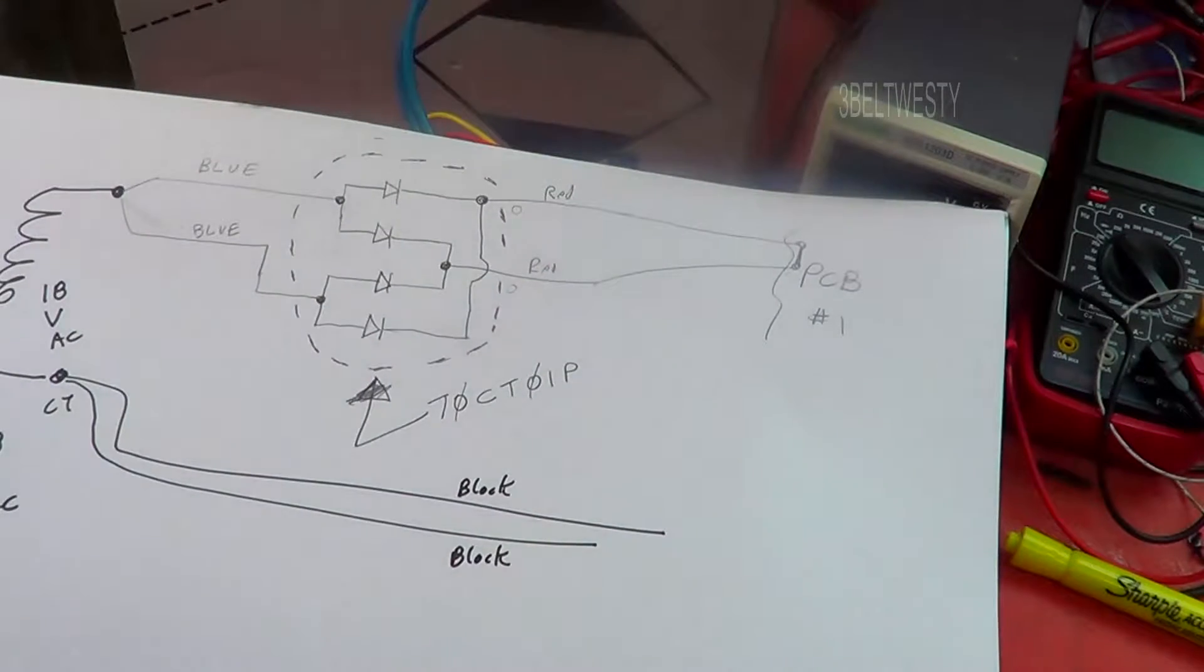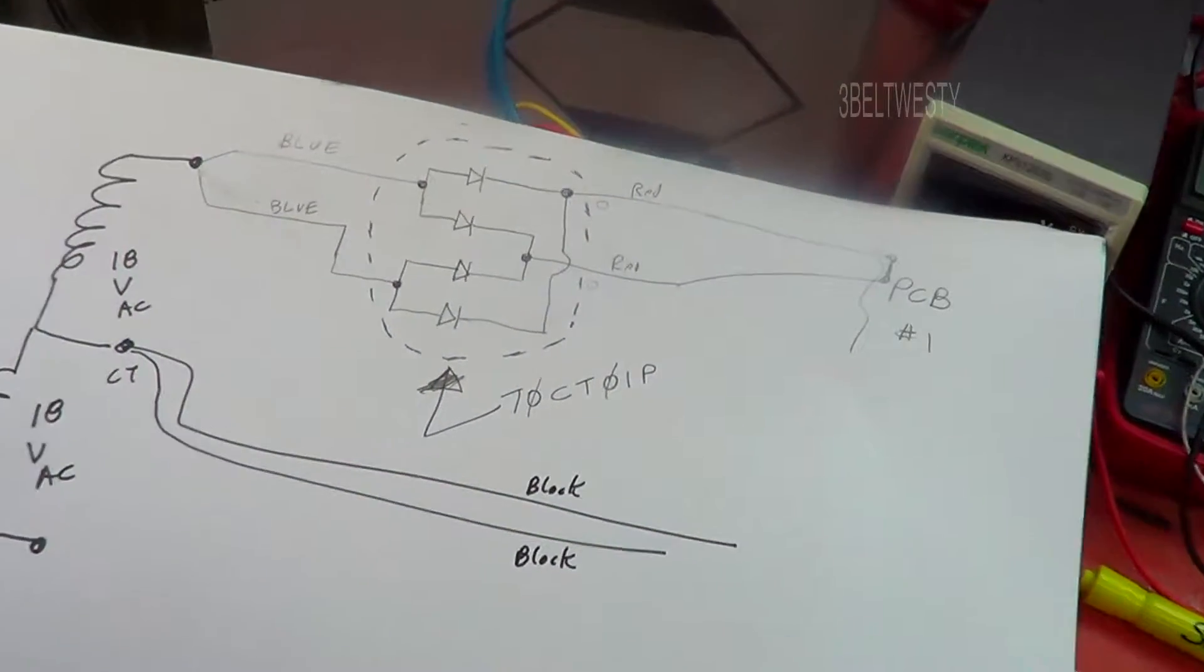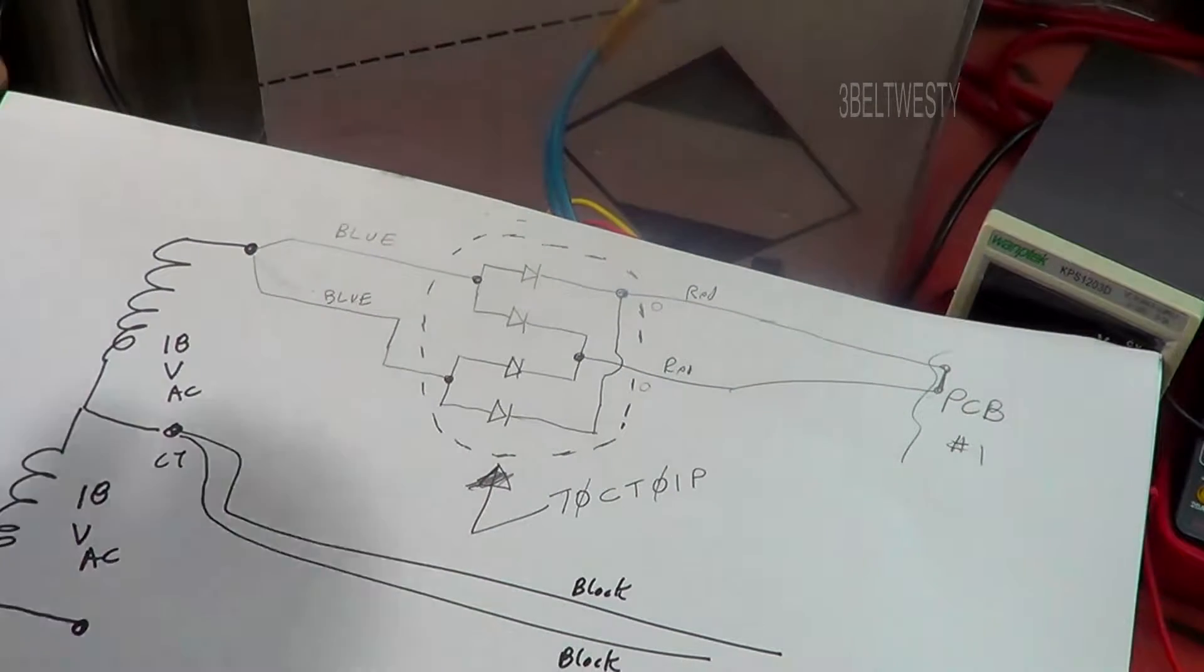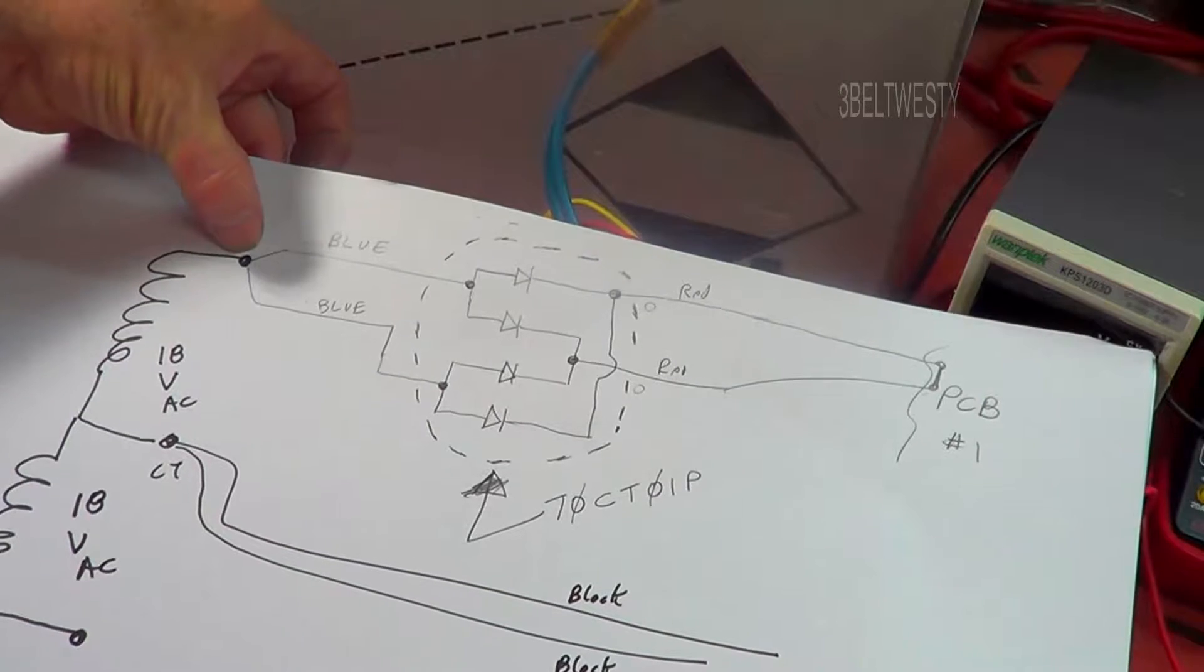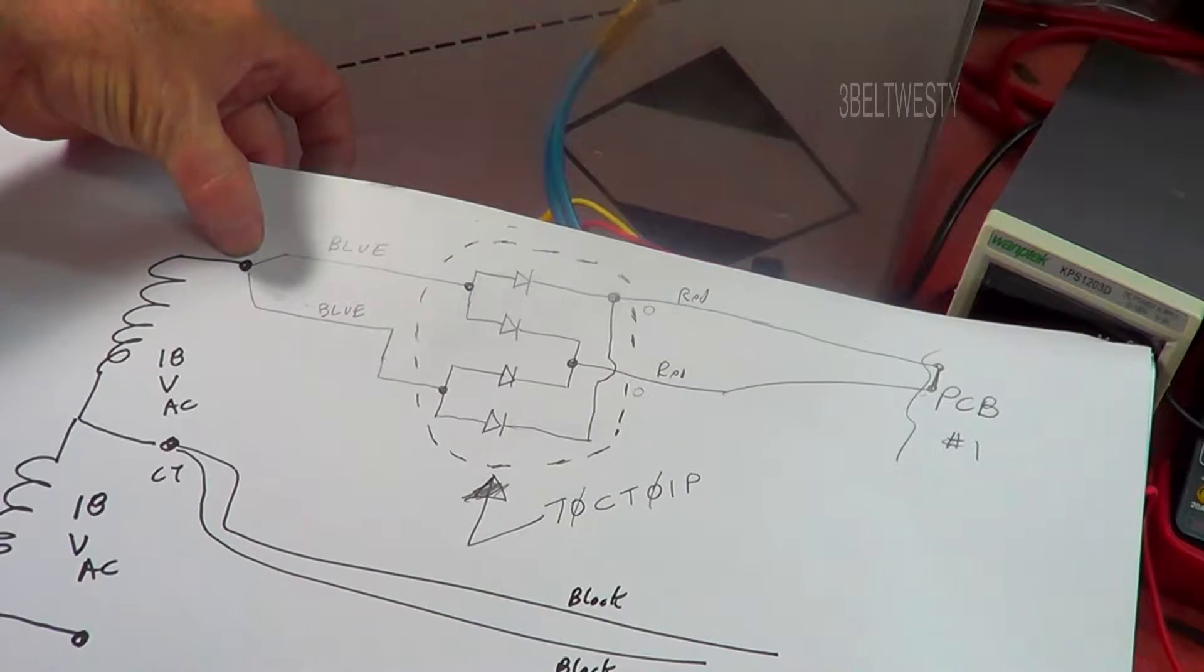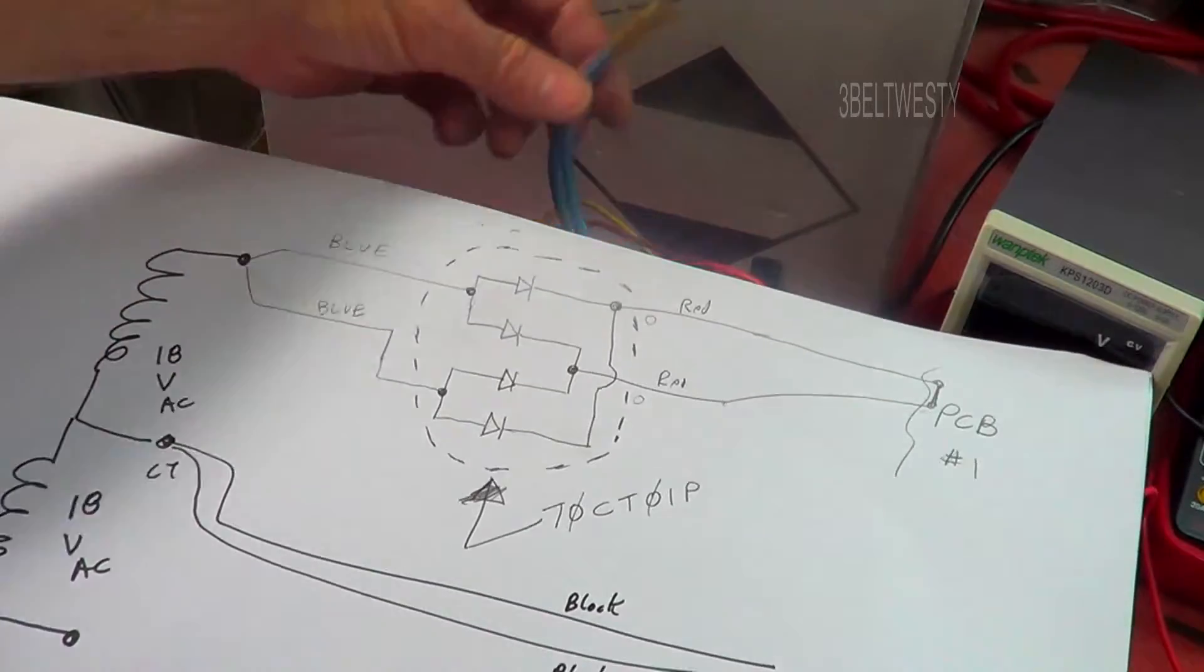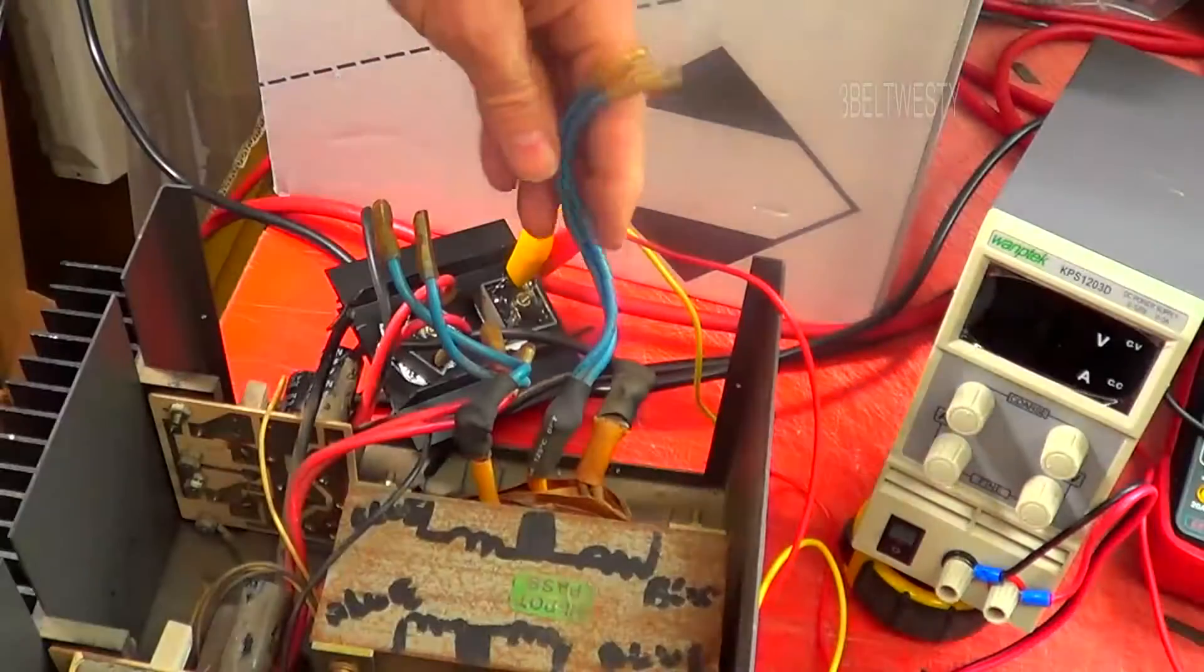That's why it's a little bit goofy. I'm just going to look at one just for clarity. Zoom in here. So one end of the transformer here. Got the center tap. Of course this is 18 volts. This is the two blues. That's this right here.